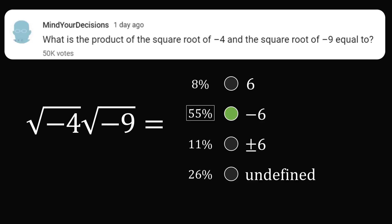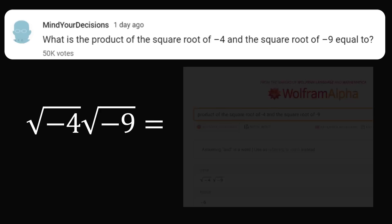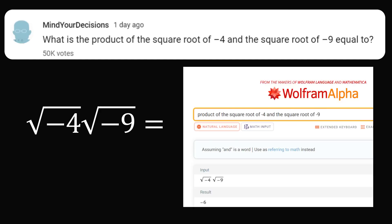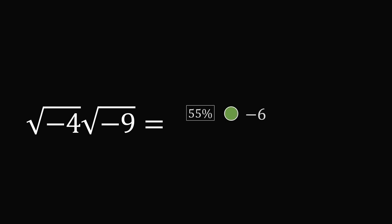Now for a simple computation like this, I always enjoy testing out Wolfram Alpha, and it said the correct answer was negative 6. So let's go through the option choices starting with the answer of negative 6. How do we evaluate this to negative 6?